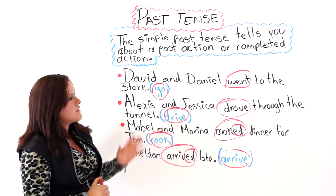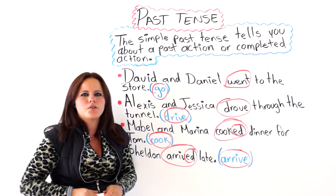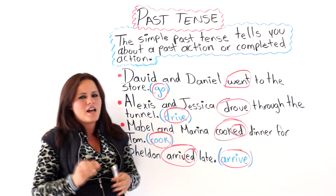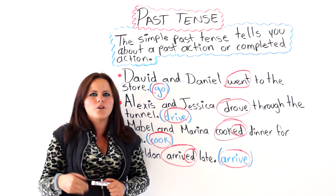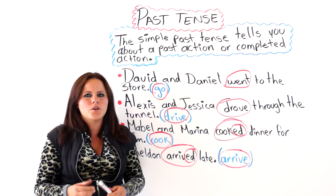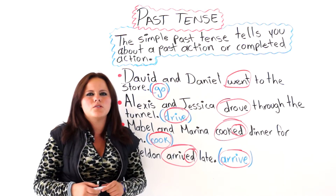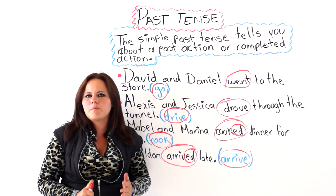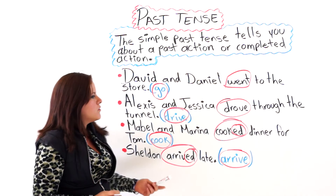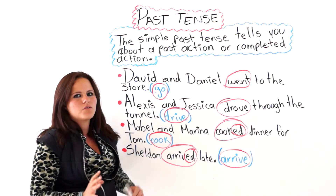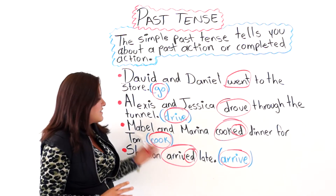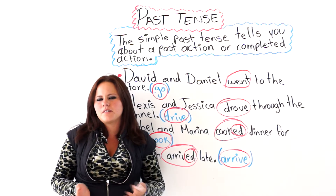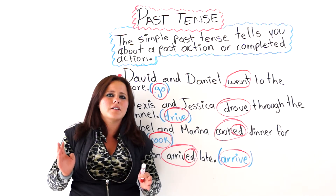So this is basically how you use the past tense. They tell you about a past action or a completed action — what you did yesterday, what you ate yesterday. You must always use the verb in the simple past tense. Some people get confused and use the past participle, but no — when you use the simple past, simply use the simple past of the verb.